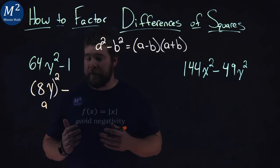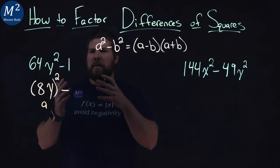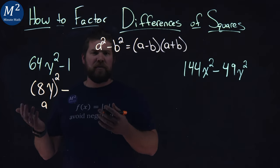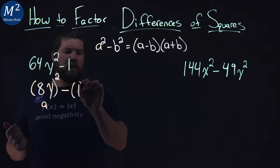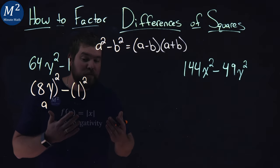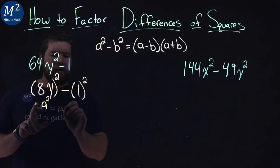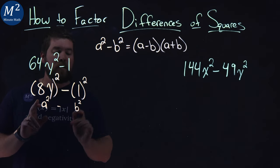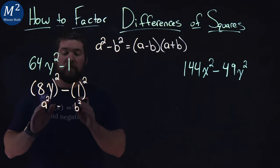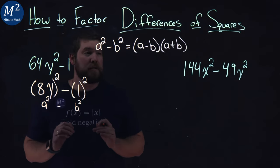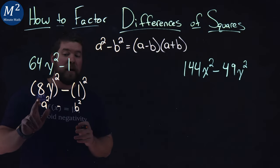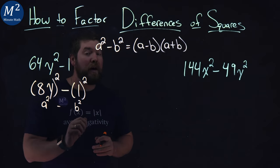What about 1? Can 1 be rewritten as something squared? The answer is yeah, itself. 1 squared is equal to 1. So we have an a squared right here minus a b squared going on. And notice our a and b values we've labeled. We can rewrite this. And so since our a value is 8y and our b value is 1, we can apply our formula.